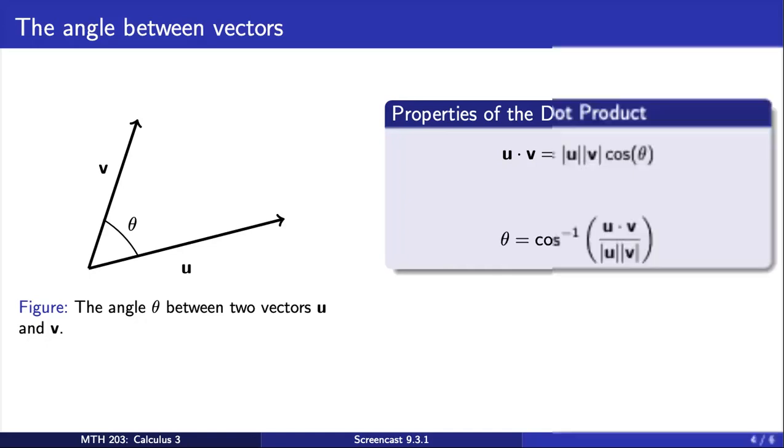Sometimes, it is useful to think of this relationship as giving us the angle between two vectors, so we can rewrite it as we have here. On the next few slides, we will use this relationship to deduce other geometric information about vectors.